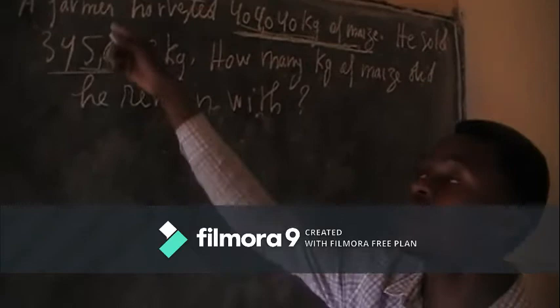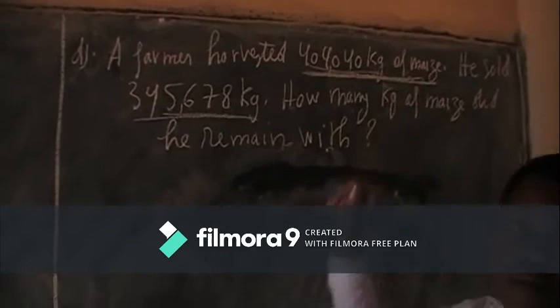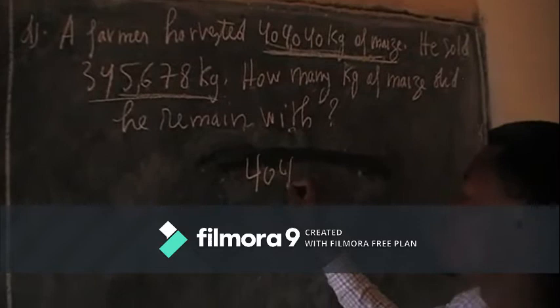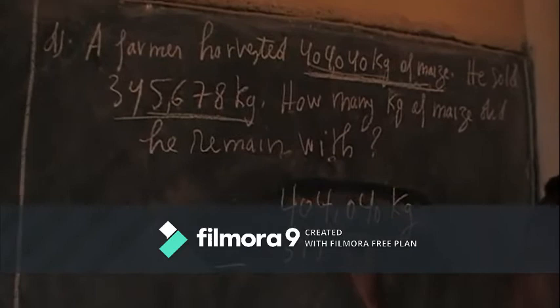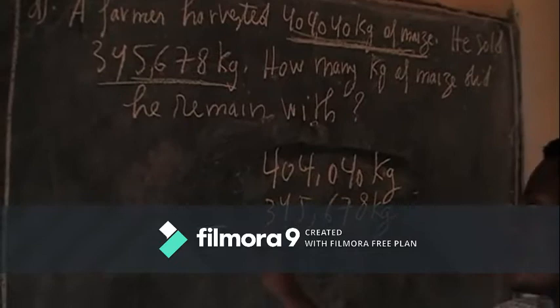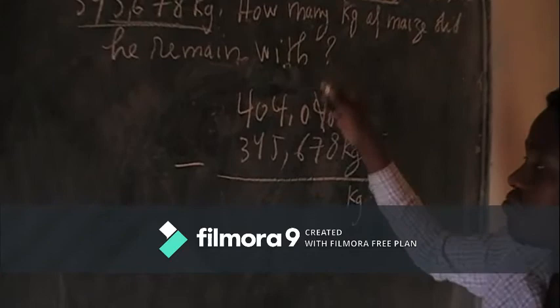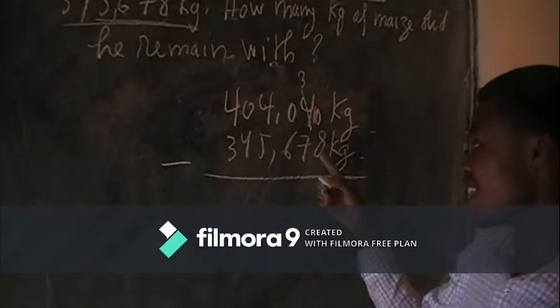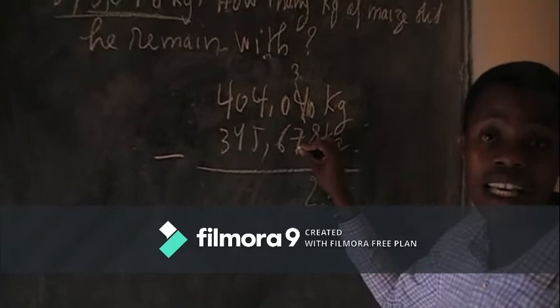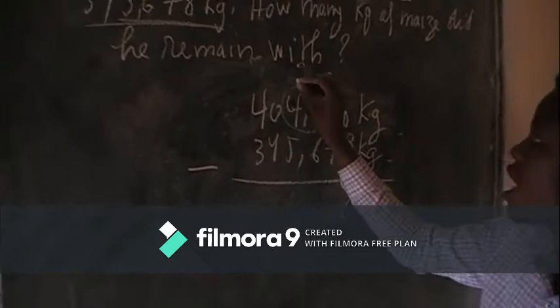So: 484,040 kilograms minus 345,678 kilograms. Zero minus 8 is impossible, so we borrow from 4 — it becomes 3, and here becomes 10. 10 minus 8 is equal to 2. Then 3 minus 7 is impossible. We try to borrow from zero — impossible — so we borrow from 40, making it 39, and here becomes 13. 13 minus 7 is equal to 6.